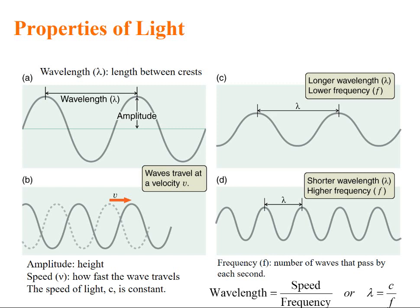We should know some basic vocabularies while dealing with light. The first one is wavelength. Wavelength is length between crests. Amplitude is simply the height of the wave. Speed is how fast the wave travels. So, light travels at a speed c, which is a constant. Frequency can be defined as number of waves that pass by each second. And wavelength and frequencies are connected. Wavelength lambda equals c divided by f, where c is speed, f is frequency. Longer the wavelength, lower the frequency.